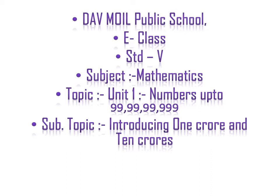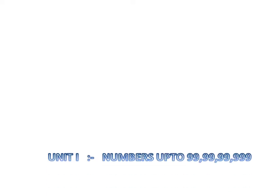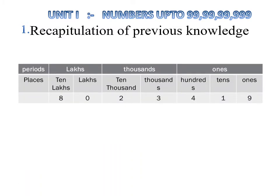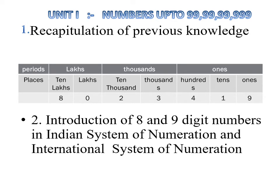In this topic we are going to discuss the new places in the Indian system of numeration, that is one crore and ten crore. Before studying, let us review the last session. We learned about three periods: lakhs, thousands, and ones. In lakhs, there are two places — ten lakh and lakh. In thousands, two places — ten thousand and thousand. In ones, three places — hundred, tens, and ones.